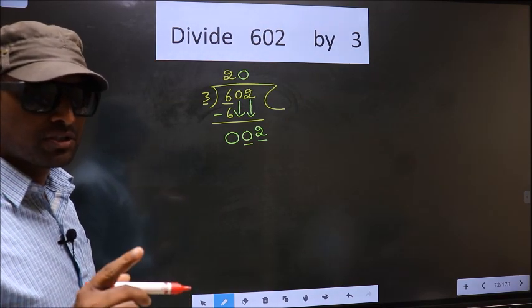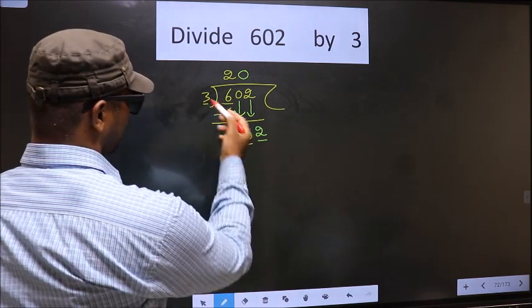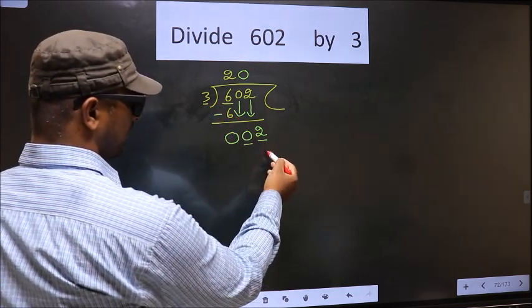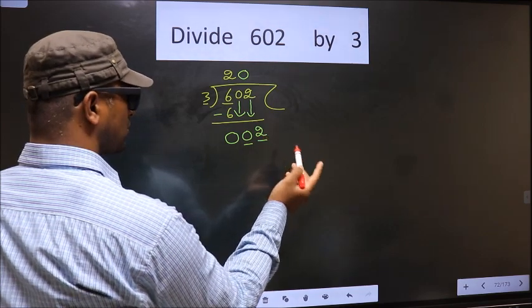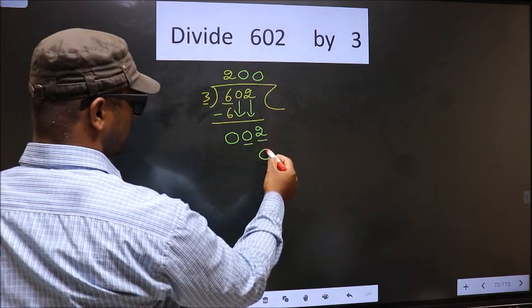Instead, what you should think of is what number should we write here. If we write 3 here, that is larger than 2, so what we do is take 0. So 3 into 0 is 0.